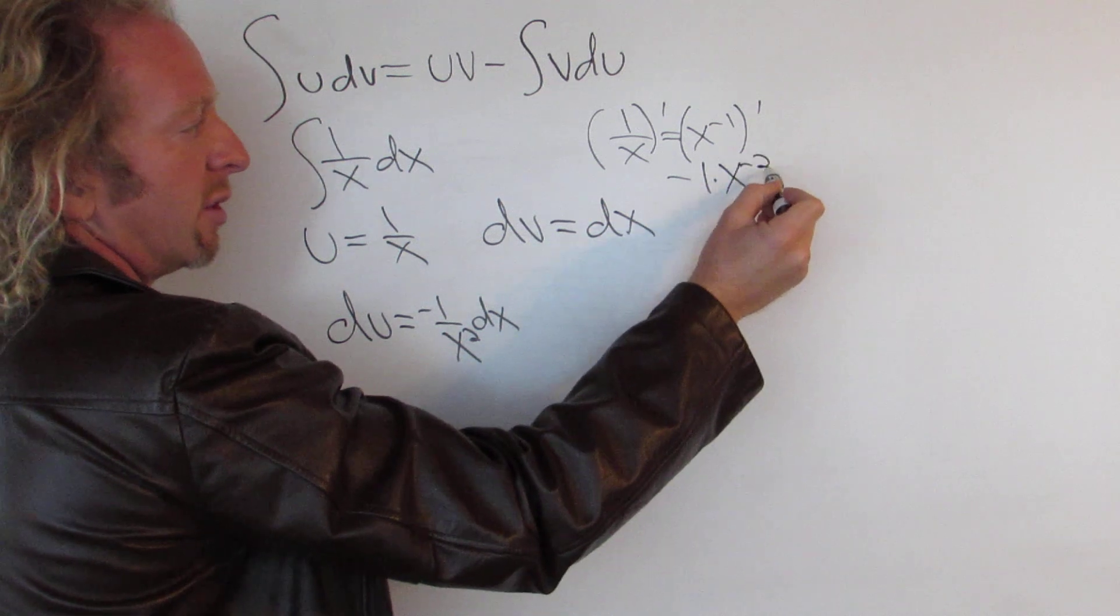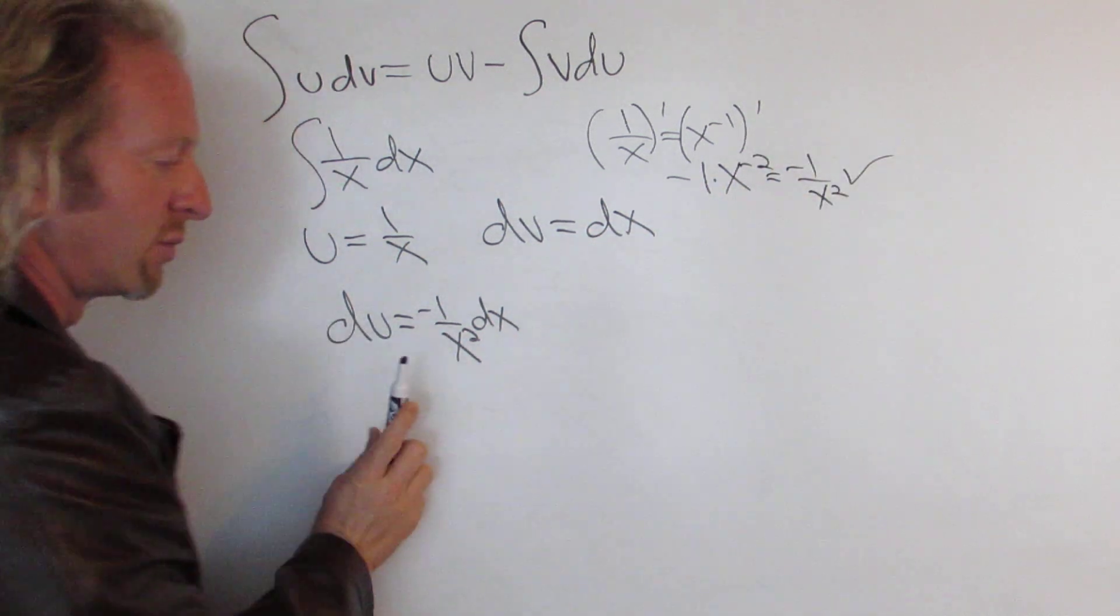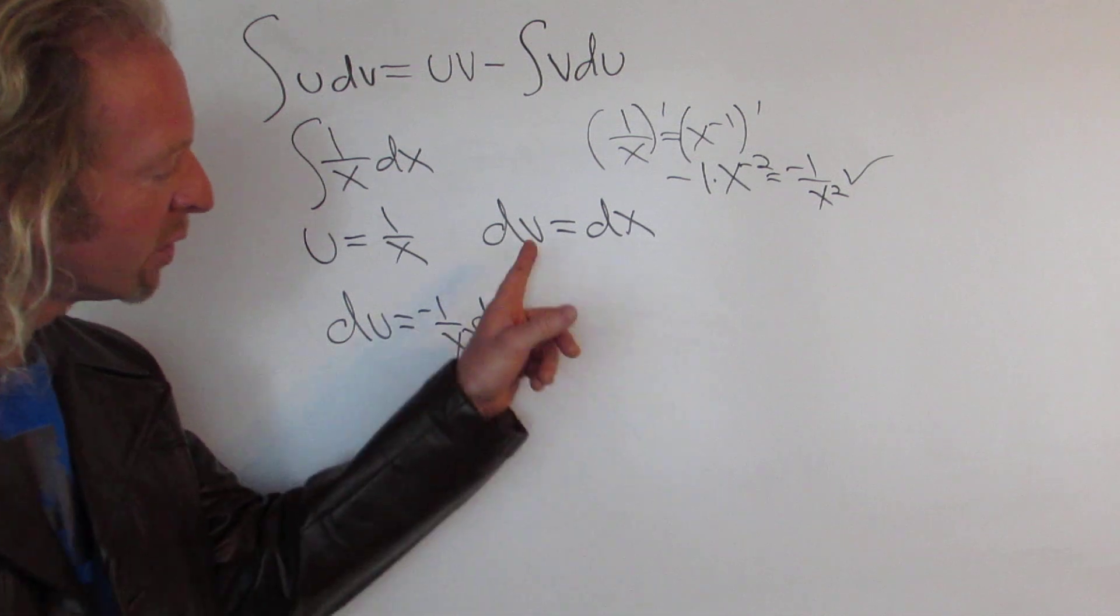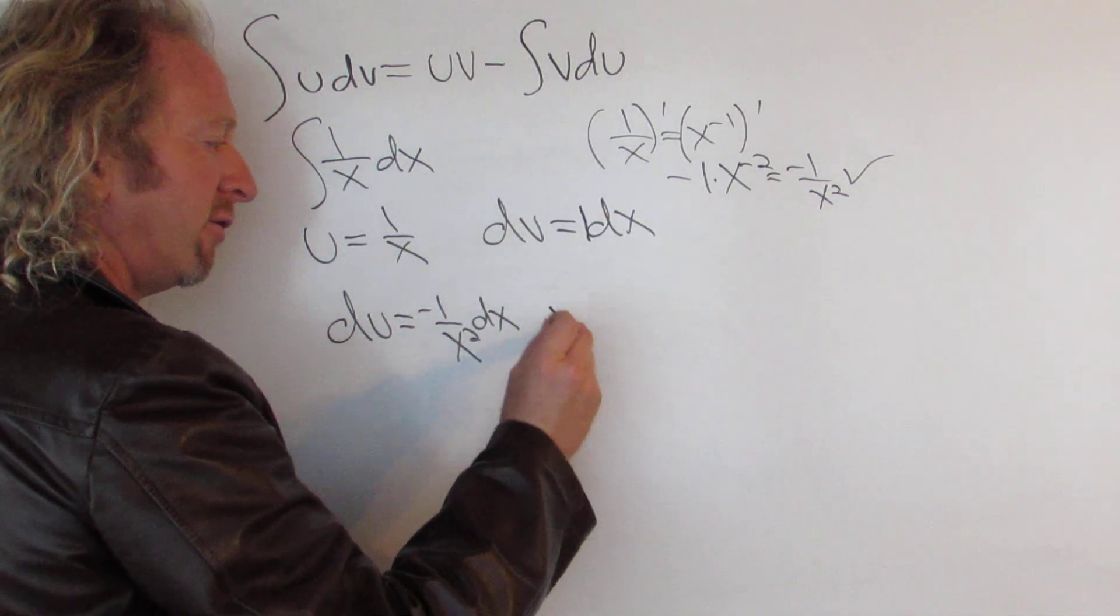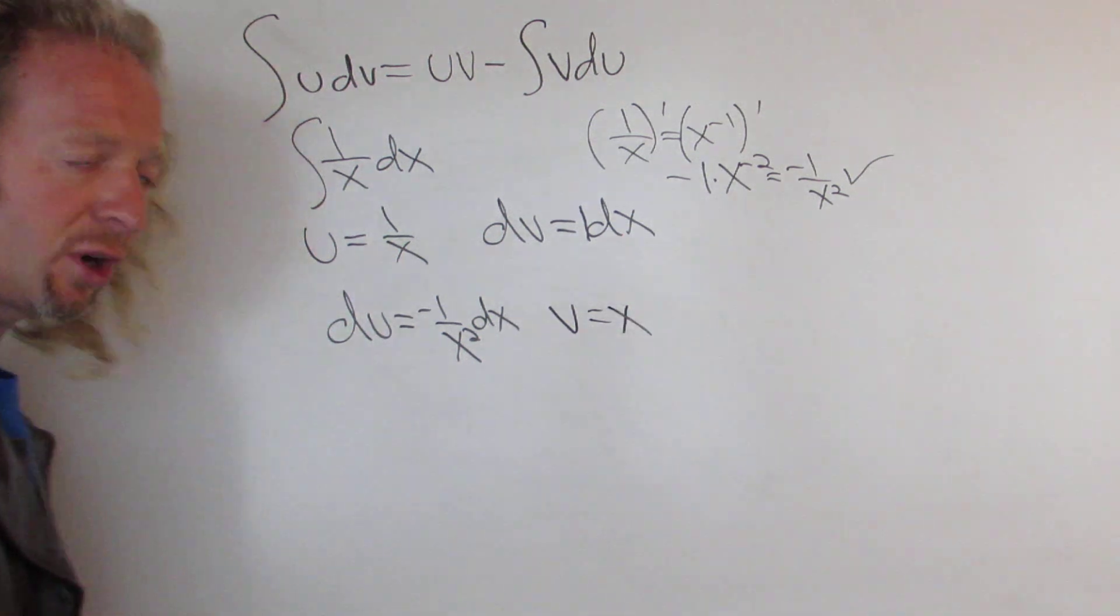So you get negative 2, so you get negative 1 over x squared. So that's what we have here, so no problems there. When you integrate dv you're just really integrating 1, right, so you just get v equals x.